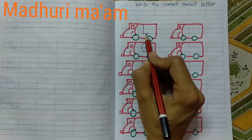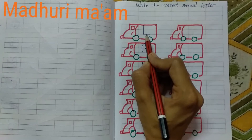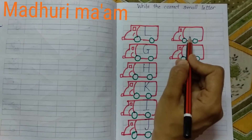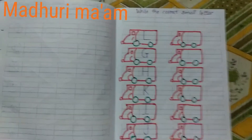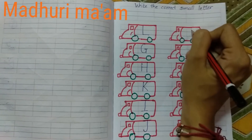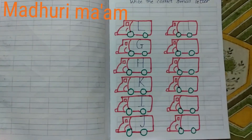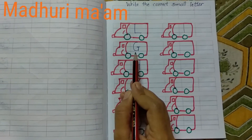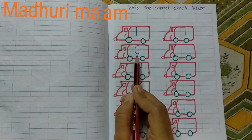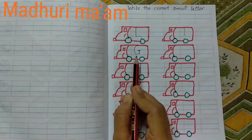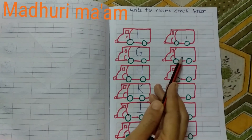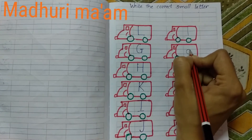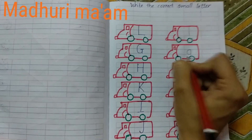Which letter is this? This is capital L. So what to write here? We have to write small l, like this. Then next — which letter is this? This is capital G. So here what to write? Small g, like this.